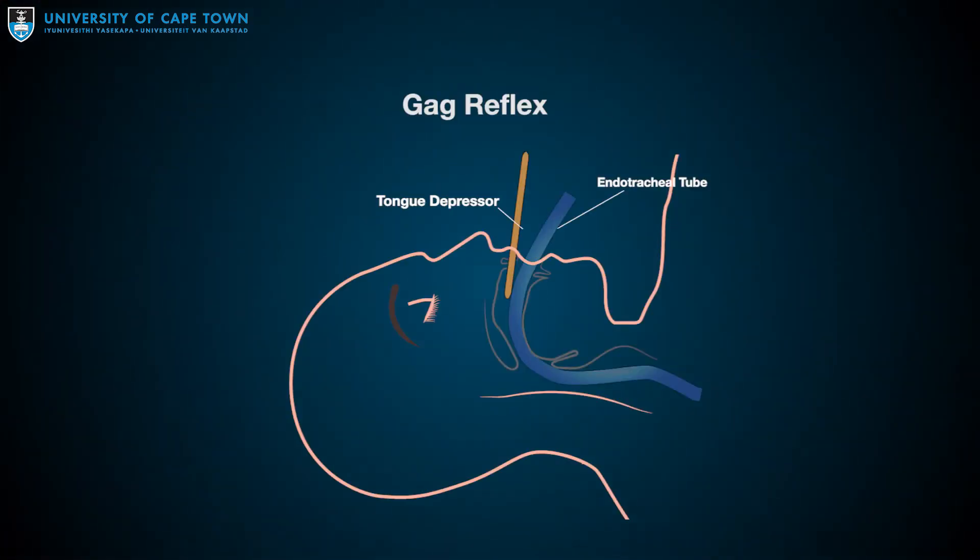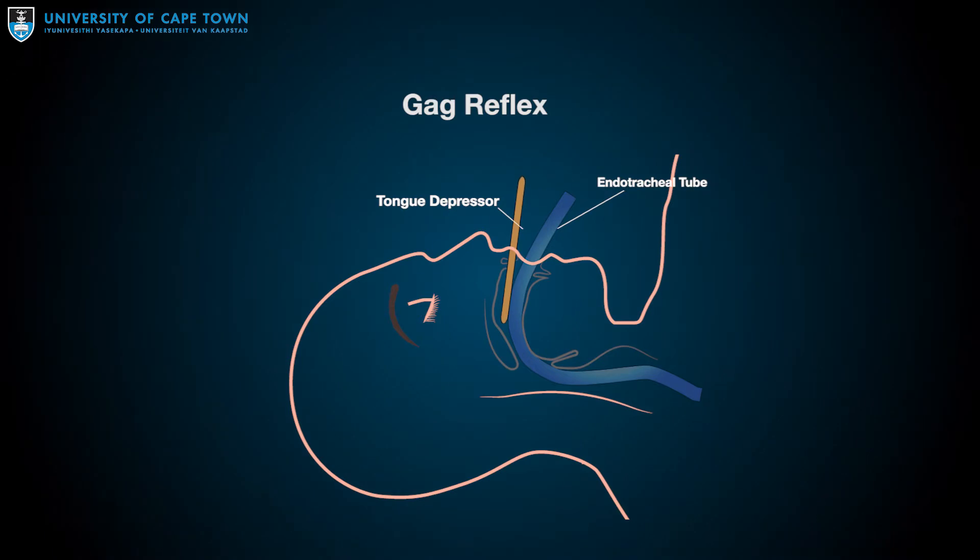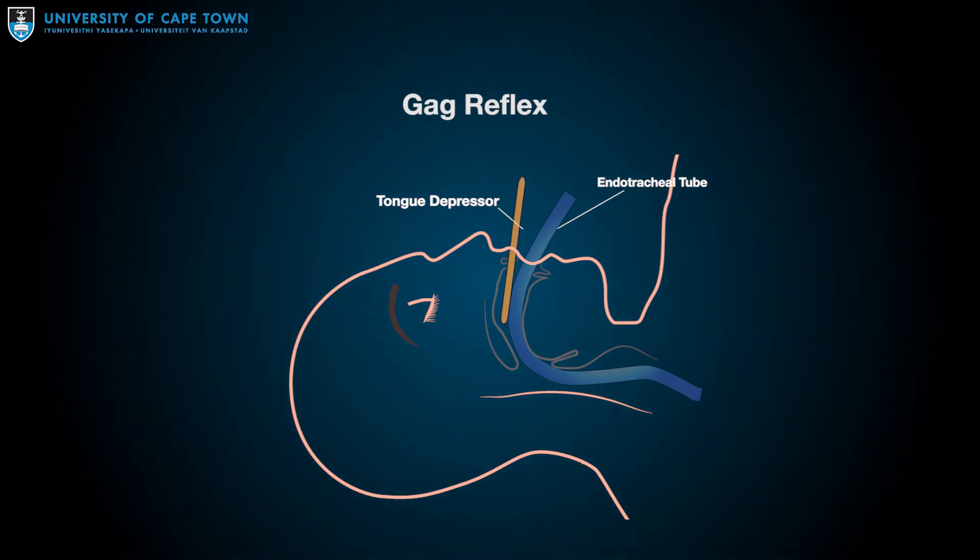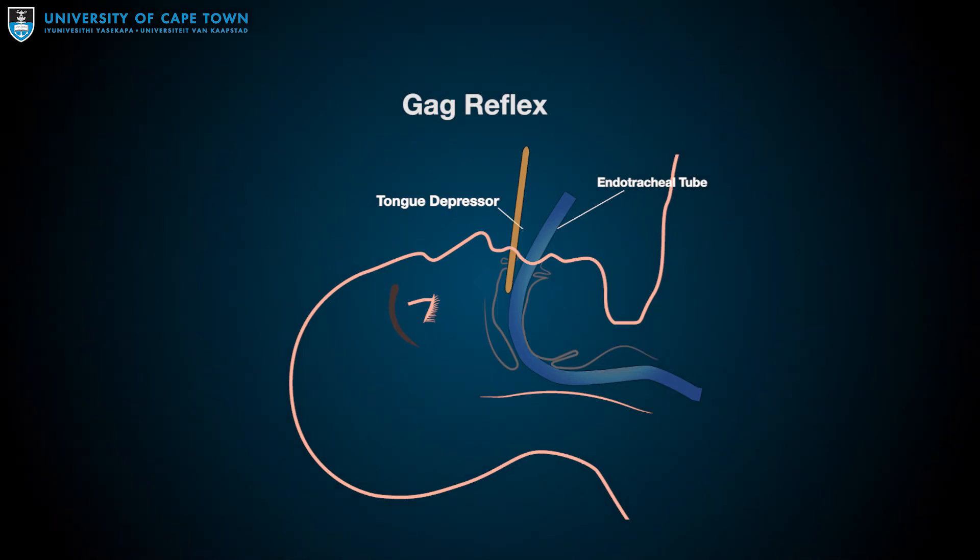Number three: there must be no gag reflex. Stimulate the posterior pharyngeal wall on both sides. If there is no gag response, proceed with brain death tests. If a gag response is observed, again stop clinical testing as this precludes determination of brain death.